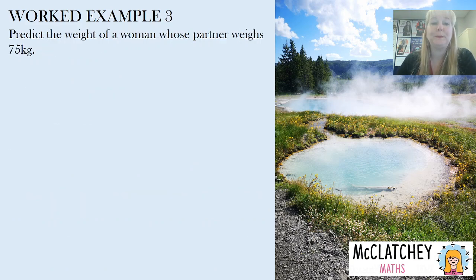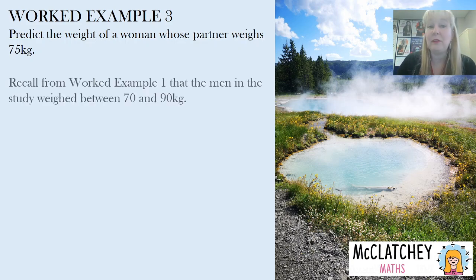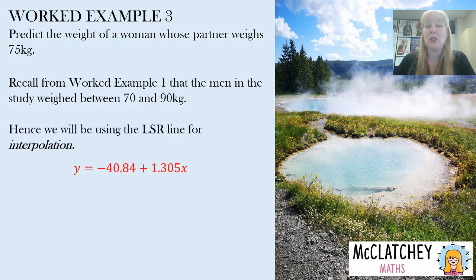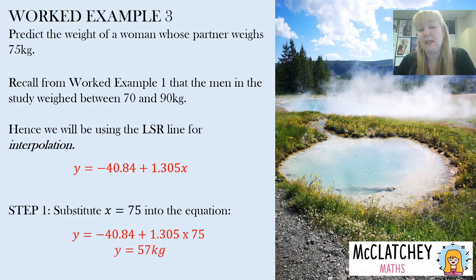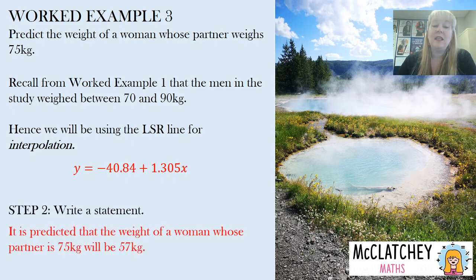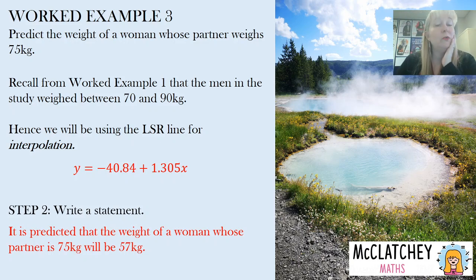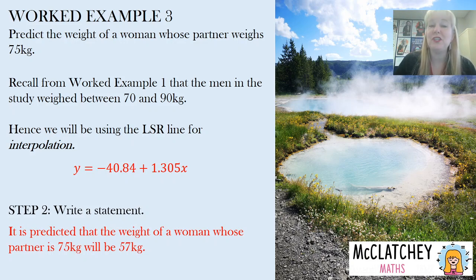Now let's do some predictions. Predict the weight of a woman whose partner weighs 75 kilos. Since the men were between 70 and 90 kilos, this is an example of interpolation. We substitute x equals 75 into our equation and evaluate on the calculator to find y equals 57 kilos. It is predicted that the weight of a woman whose partner is 75 kilos will be 57 kilos. This interpolation result makes sense in a real-life situation.